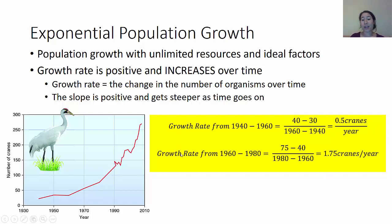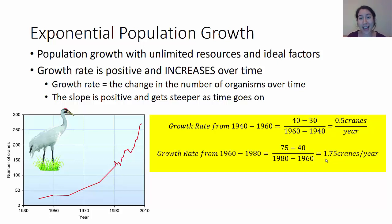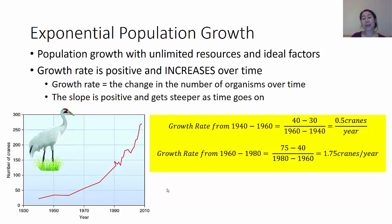Similarly, I can calculate the growth rate from 1960 to 1980 the same way, and I see a positive increase of about 1.75 — almost two cranes per year — when you balance out births and deaths. That number is larger than the 0.5 cranes per year, meaning the slope is increasing even faster because we're adding more cranes per year.